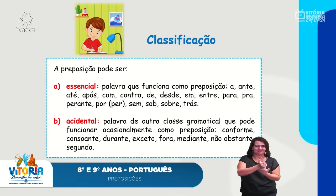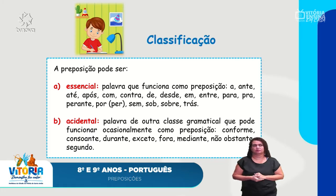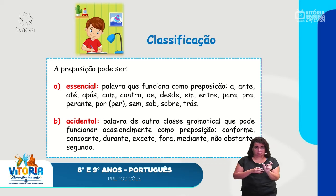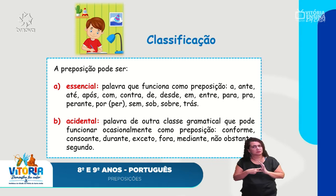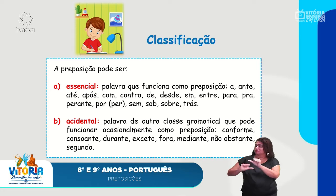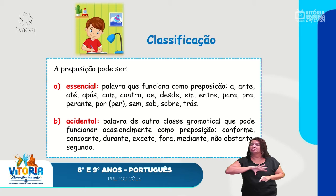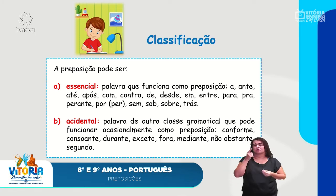Exemplos de preposições acidentais: 'conforme', 'consoante', 'durante', 'exceto', 'fora', entre outras palavras que podem também funcionar como preposição. O interessante da classe de palavras é que uma palavra, dependendo do contexto, pode modificar a sua classificação — pode ser um substantivo, pode ser um verbo. O importante é que a gente sempre tenha conhecimento do contexto para criar os nossos sentidos.